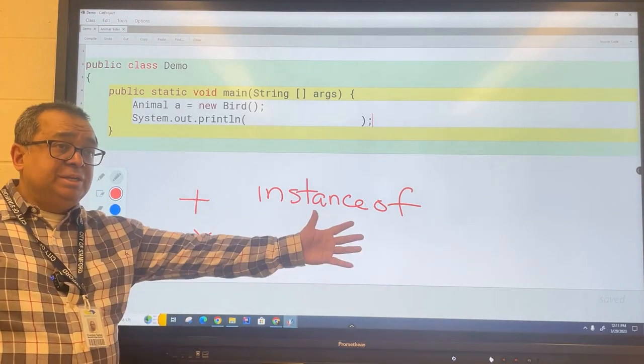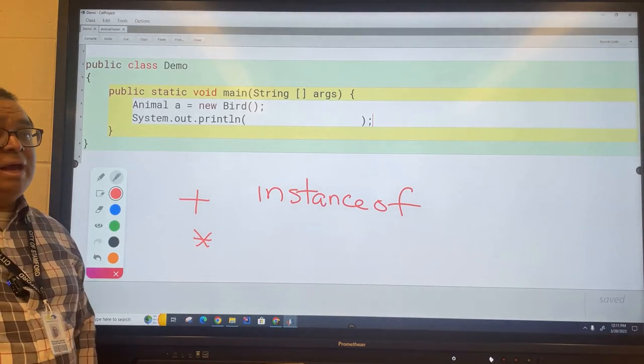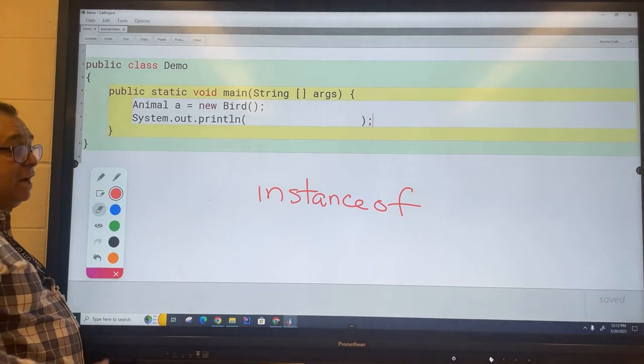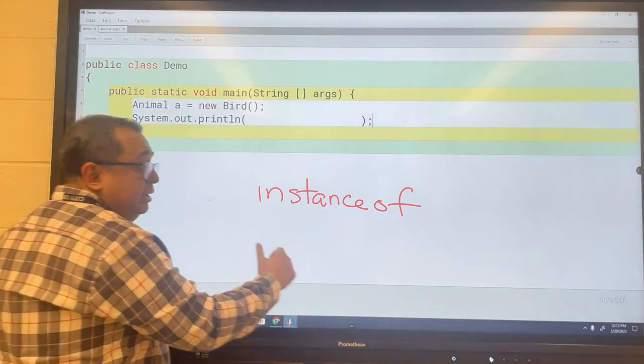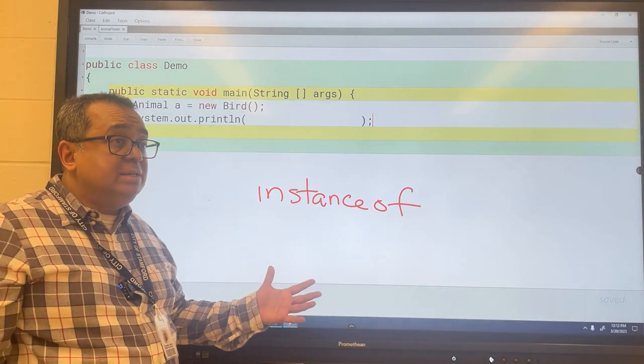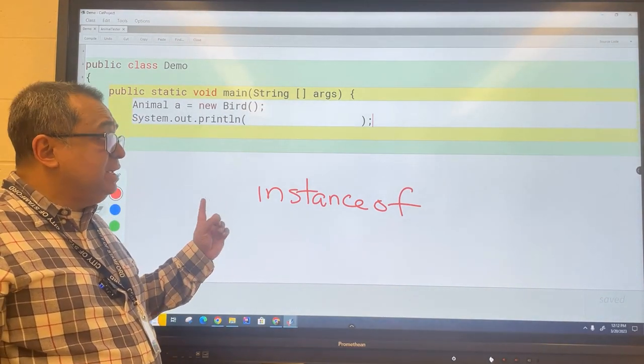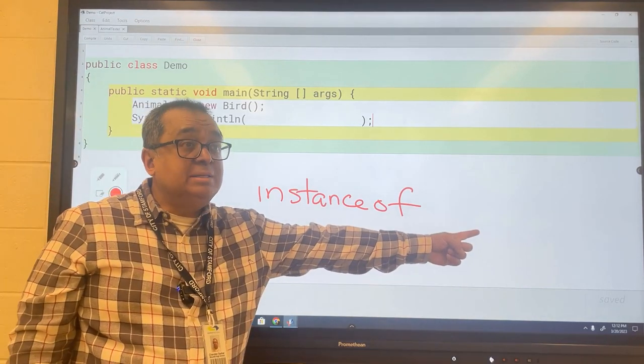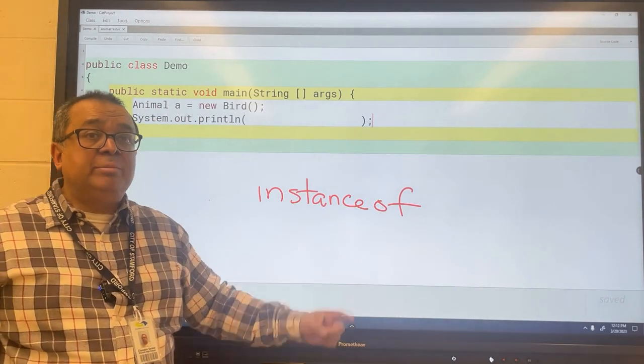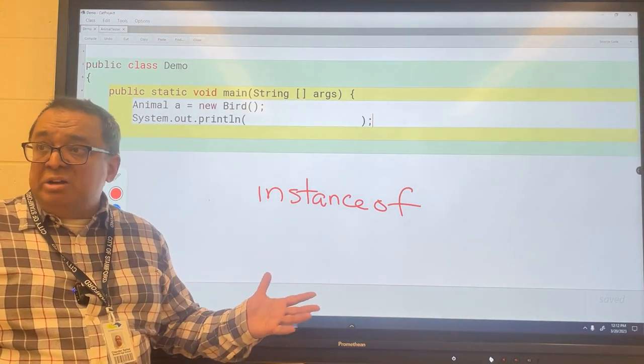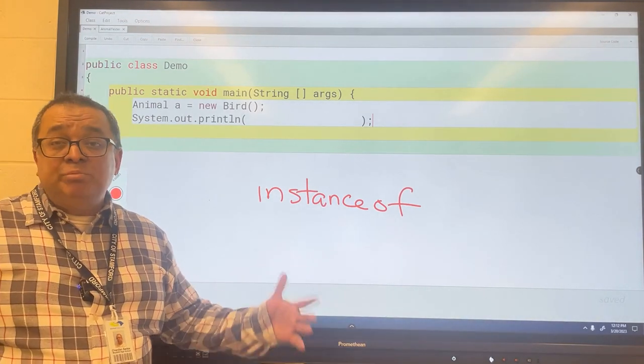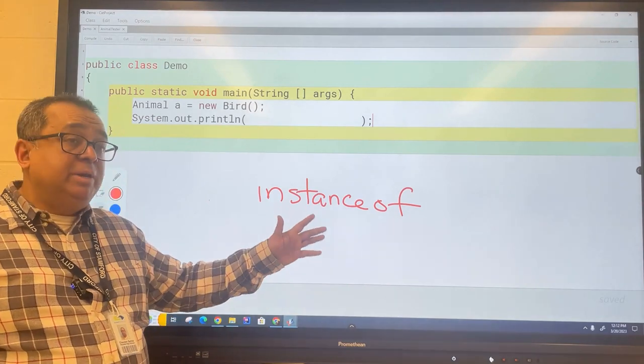Anyway, so this is the operator that we're talking about. The way you use this operator is you have to have an object over here and you have to have a class over here, and then when you run it at runtime it will tell you whether this object belongs to this class. And what do you think it will return? What data type do you think will get returned by this operator? It's Boolean, it tells you it's going to be true or false.